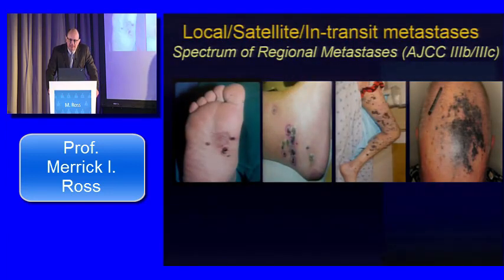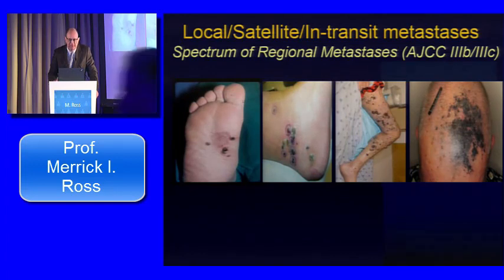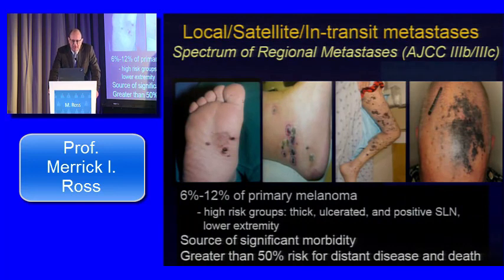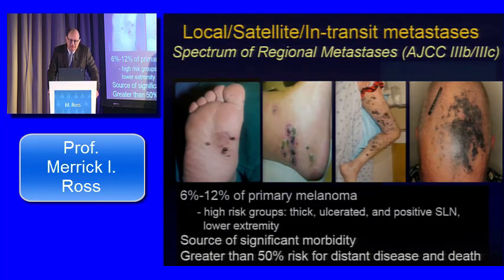Regional cutaneous metastases, collectively called intransit metastases, represent local recurrences, satellite, or intransit disease, initially defined by distance from the primary tumor — which has no biologic import whatsoever. It's all the same spectrum of regional cutaneous metastases that are mostly lymphatic-based. This entity occurs in about 6% to 12% of all patients with primary melanomas. High-risk groups include patients with thick, ulcerated melanomas and positive sentinel lymph nodes, particularly in the lower extremity. Even patients presenting with apparently localized disease have greater than a 50% risk of developing distant disease.